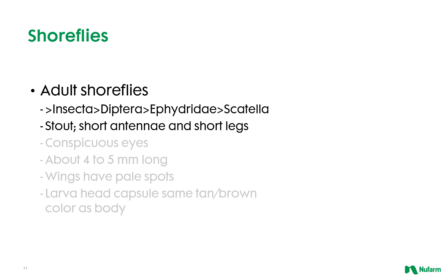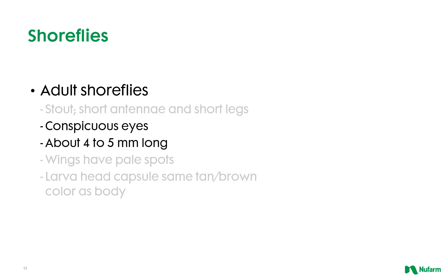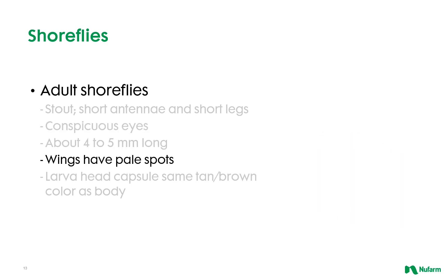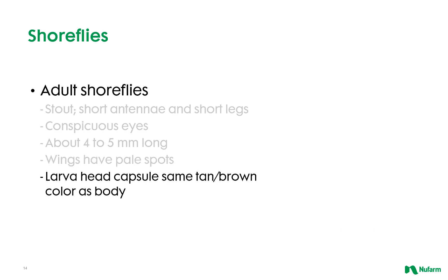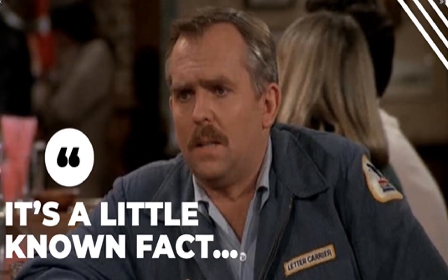Shore flies belong to the Ephydridae family in the Diptera order of insects. They are characterized by short antennae and short legs. They are about four to five millimeters long and have very conspicuous eyes. Shore fly wings also have pale spots, and the shore fly larvae head capsule is the same color as their stoutish body. Now that we know what we're looking at, it's time to review some little-known fungus gnat and shore fly facts.